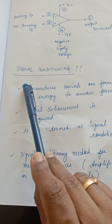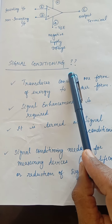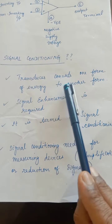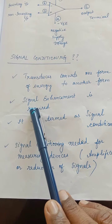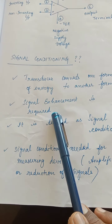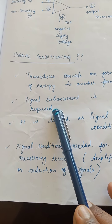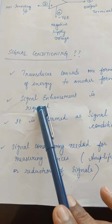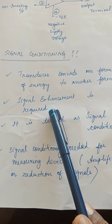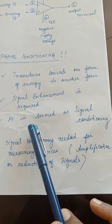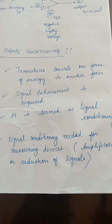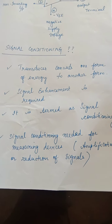The next topic is signal conditioning. The name of our subject is transducers and signal conditioners. Signal conditioning means processing the output of a transducer from one form of energy into another usable form. It is termed as signal conditioning, and signal conditioning is needed for measuring devices. For example, amplification or reduction of signals. So transducers and signal conditioners are the basics.